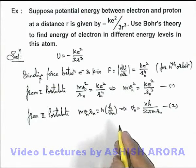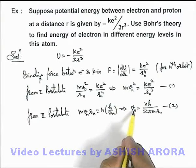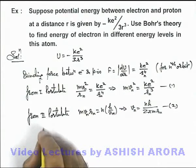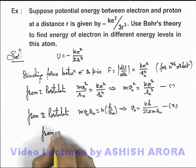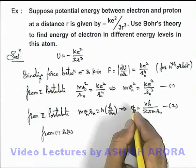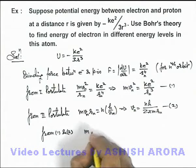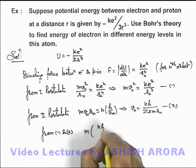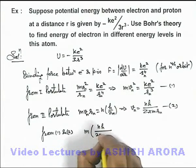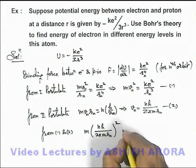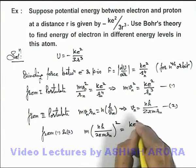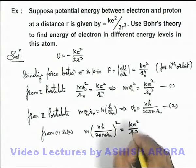Now from equations 1 and 2, we can substitute the value of v n. If we substitute the value of v n in equation 1, this gives us m multiplied by n h over 2 pi m r n whole square equals k e square over r n cube.